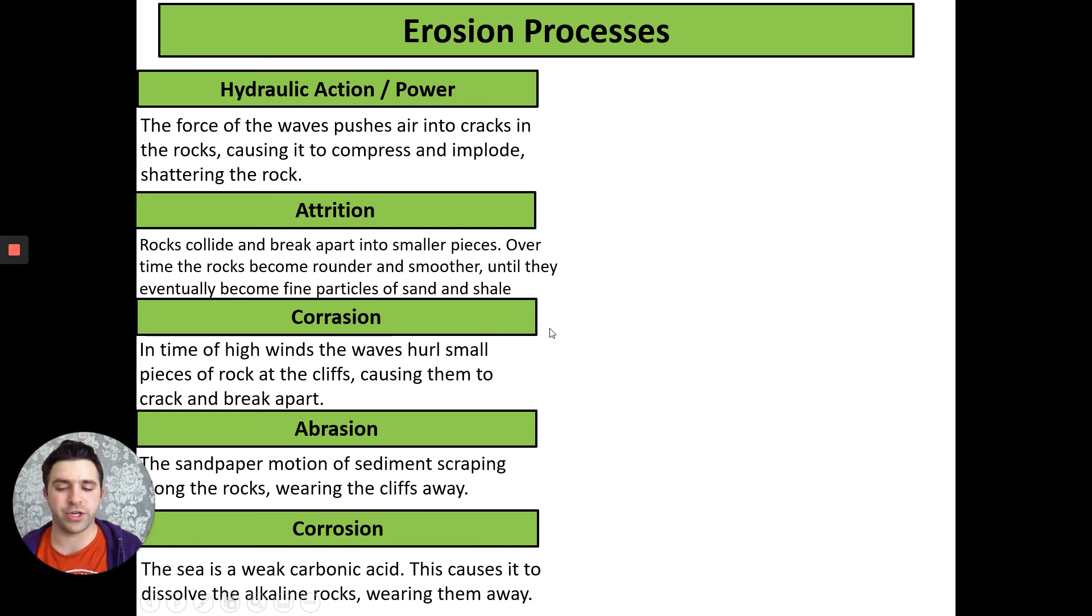Finally we have corrosion. You might also hear it referred to as solution, but we call it corrosion and this is where basically the sea, the water, dissolves the rock. Due to the carbon in the atmosphere and from decaying sea creatures, the sea becomes a weak carbonic acid. It's a very weak acid so it wouldn't affect humans but it affects the alkaline rocks such as chalk and limestone. This causes it to dissolve and wear them away, like putting sugar in your tea. Those are our five types of erosive processes.